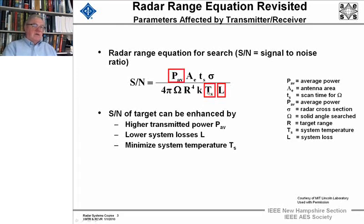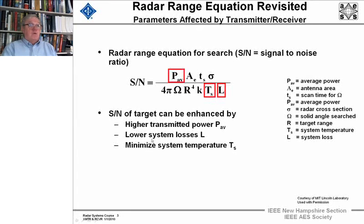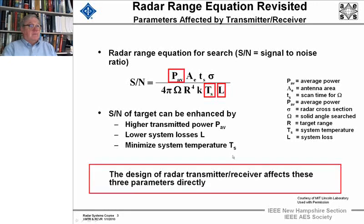Down below, the system temperature — when we looked at it in detail in the radar range equation — involves a number of issues such as loss in the receiver and other system losses that depend on the transmitter and waveguides. The things you obviously want are: signal-to-noise ratio enhanced by higher average power in the transmitter, lower system losses both on transmit and receive, and minimizing the system temperature. The design of the radar transmitter and receiver subsections directly affects these three parameters.